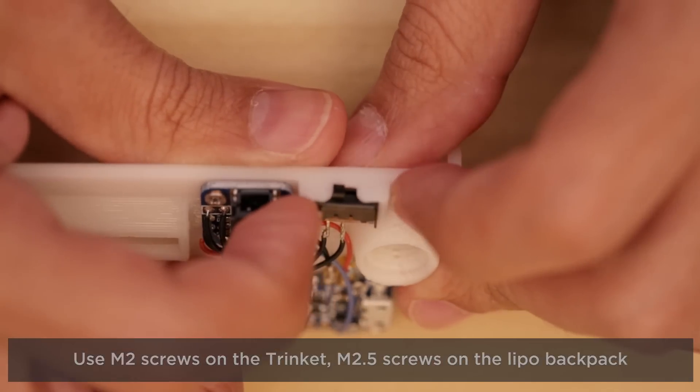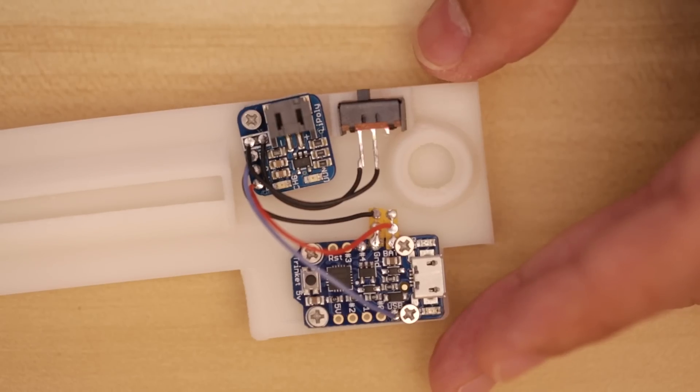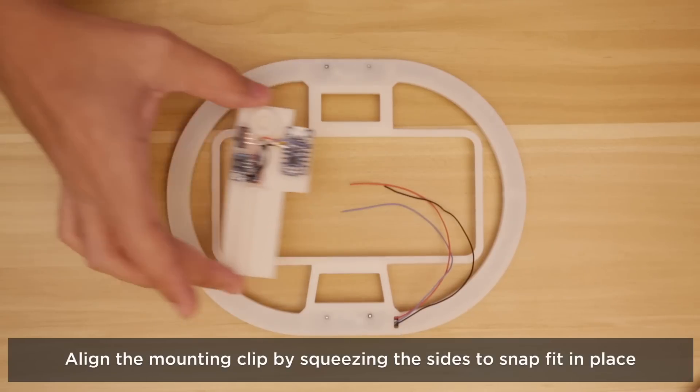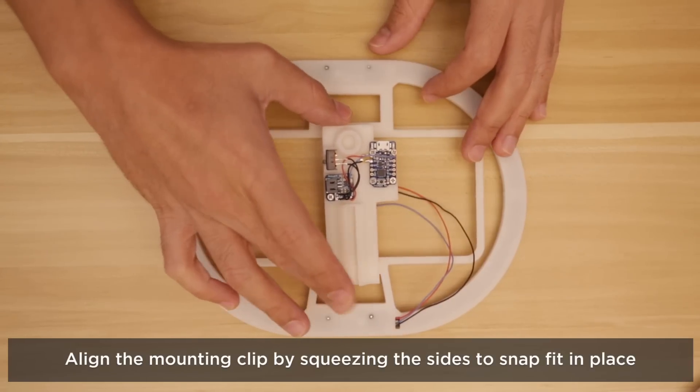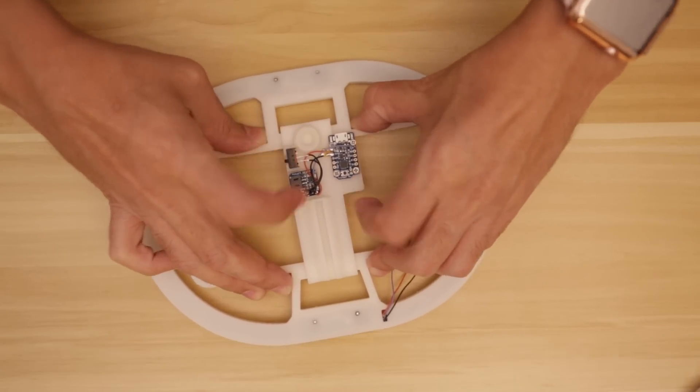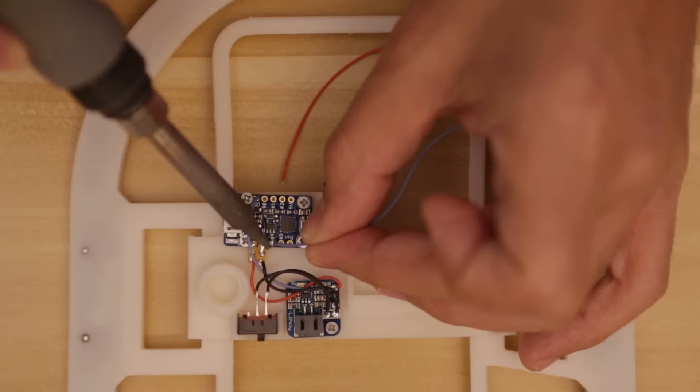We can then secure the PCBs to the clip by fastening screws into the mounting holes. The slide switch press fits into a little cavity and now we're ready to connect the Neopixel ring. The mounting bracket fits over the bumper and clips onto the edges.